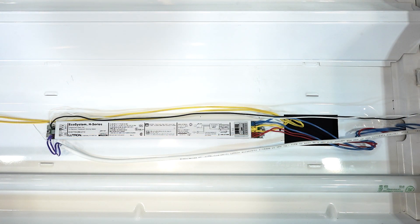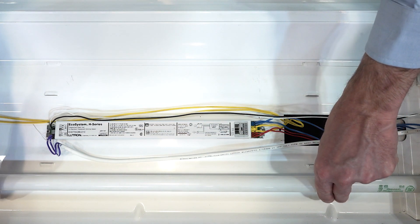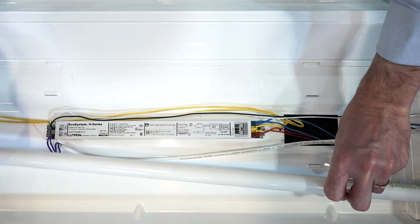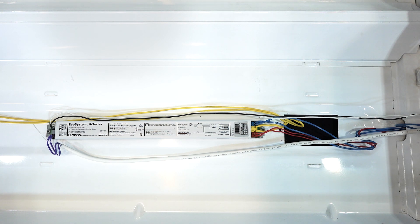Once power has been turned off to the fixture and you remove the fixture louver and ballast channel cover, start by removing the existing fluorescent lamps and dispose of them properly. At this time, also inspect the sockets, making sure they're not cracked or broken, and replacing them if necessary.